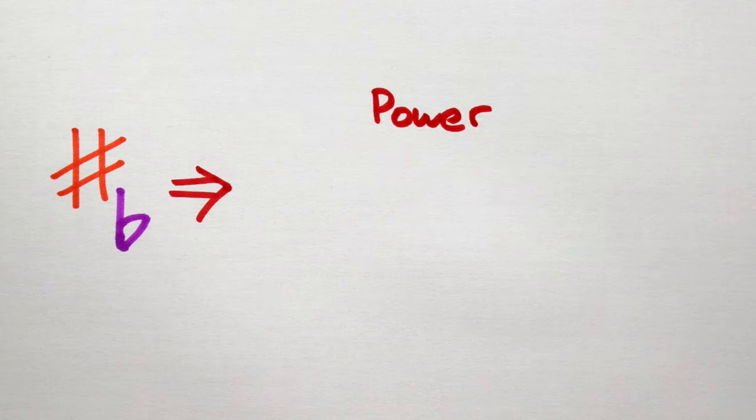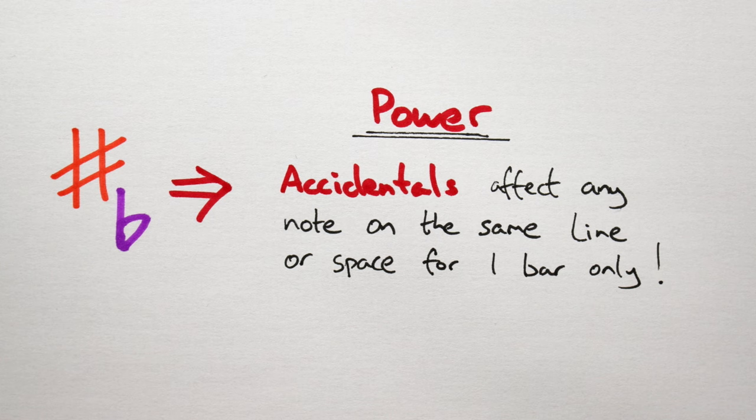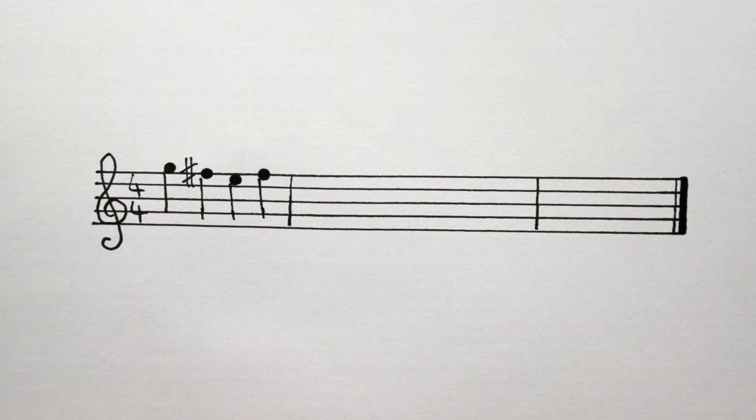Accidentals have special powers, in that they affect any note on the same line or space for the remainder of the bar. Like this bar, looks like it only has one F sharp, right? But in fact it has two, here and here. Because the accidental's power lasts for the duration of the bar.